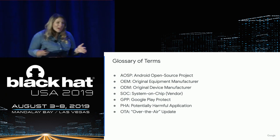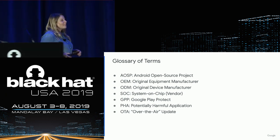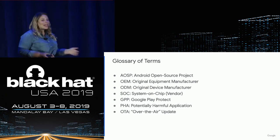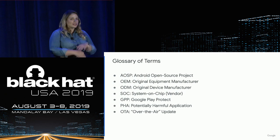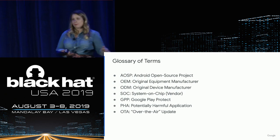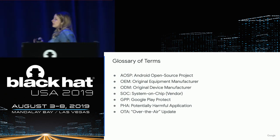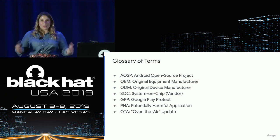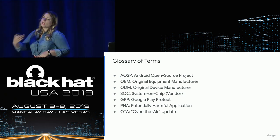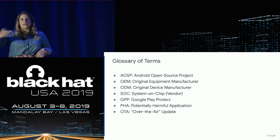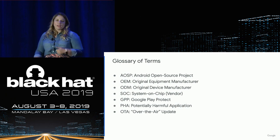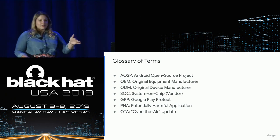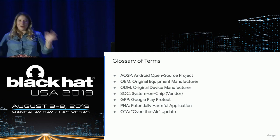I do use some acronyms, so I want to bring everyone up to the same level. AOSP is the Android Open Source Project — the code that is completely open source for the Android operating system. When a device is built, Google, Samsung, and all the different OEMs then generally add customizations on top of that. OEM is the company delivering the device — so Samsung, Huawei, BB Mobile, all the different OEMs.